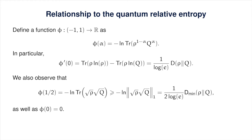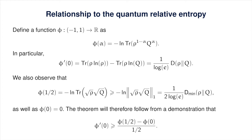By evaluating the function phi at the value 1/2, we obtain the negative natural logarithm of the trace of the square root of rho times the square root of q, which is at least 1 over 2 times log base 2 of e times the min-relative entropy of rho with respect to q. The factor of 2 comes from the fidelity squared appearing in the definition of the min-relative entropy. It's also the case that phi of 0 is zero. Thus the theorem will follow from showing that the derivative of phi at 0 is at least phi(1/2) minus phi(0) divided by 1/2, which follows from phi being a concave function.